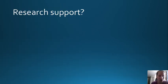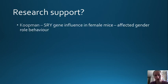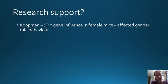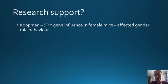In terms of research support for the idea that chromosomes are involved in sex and gender, there is a study by Koopman on female mice fetuses, where he added in the SRY gene to female mice and found that they basically took on a male gender role - they tried to mate with females. Equally, he knocked out the SRY gene in male mice fetuses and found that they took on a female gender role, appearing and acting like female mice. This is quite strong evidence for the role of the SRY gene and chromosomes in determining sex and gender.